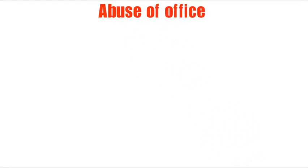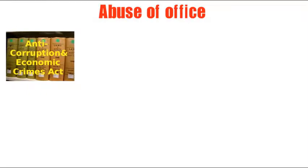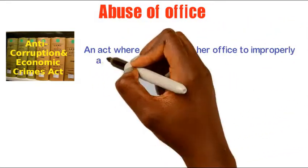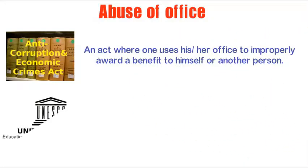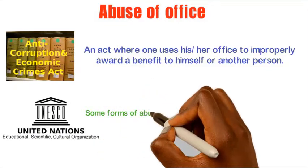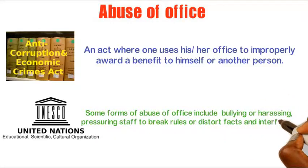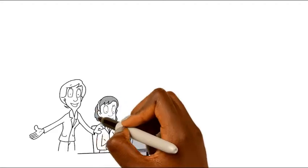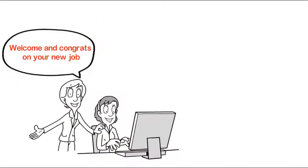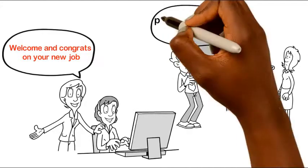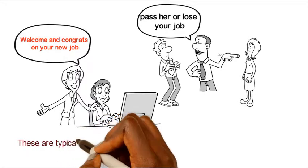Another concept is abuse of office. Section 46 of the Anti-Corruption and Economic Crimes Act, 2011 defines abuse of office as an act where one uses his or her office to improperly award a benefit to himself or another person. According to UNESCO's Ethics Office, some forms of abuse of office include bullying or harassing, pressuring staff to break rules or distort facts, and interfering with a colleague's ability to work effectively. Examples can be seen in Scenario 5 — a government officer gets a job for her cousin without advertising — and Scenario 2, where the head of department threatens the lecturer to give higher grades to his daughter.